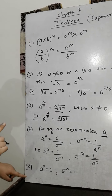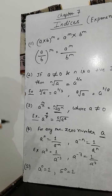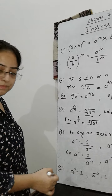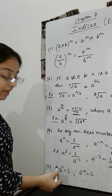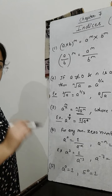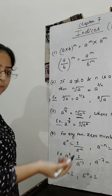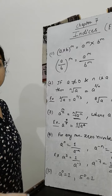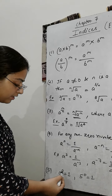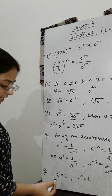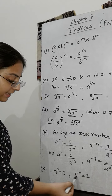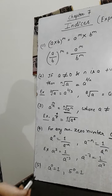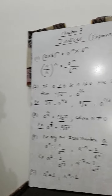The last property: for any non-zero number, if that number is raised to the power 0, its value is equal to 1. That is, a raised to the power 0 equals 1, where a is not equal to 0. In the same way, 5 raised to the power 0 will be equal to 1. So these are the main properties of indices.